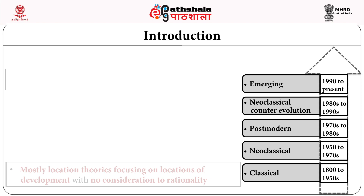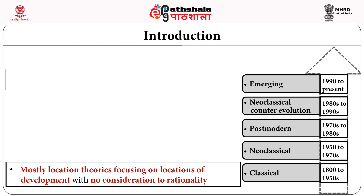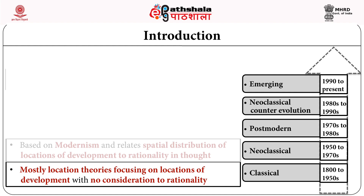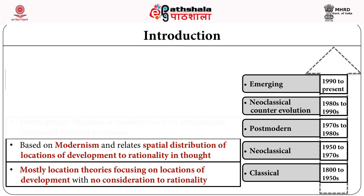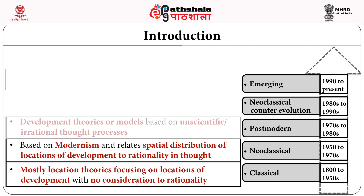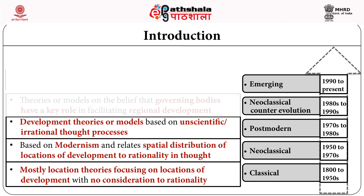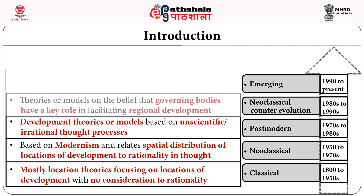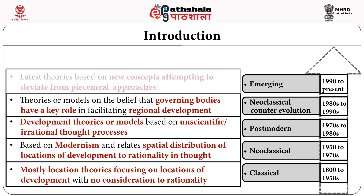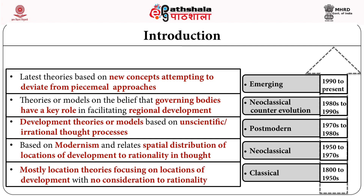Classical theories were mostly location theories focusing on locations of development with no consideration of rationality. Neoclassical theories based themselves on modernism, relating spatial distribution of locations to rationality in thought. Postmodern theories included models based on unscientific and irrational thought processes. The neoclassical counter-evolution included theories on the belief that governing bodies have a key role in facilitating regional development. Emerging theories were based on new concepts attempting to deviate from piecemeal approaches.